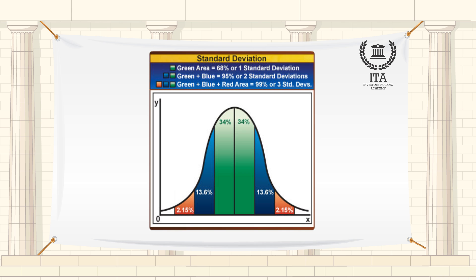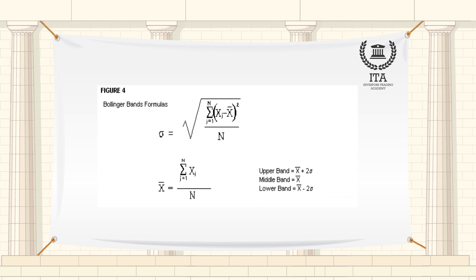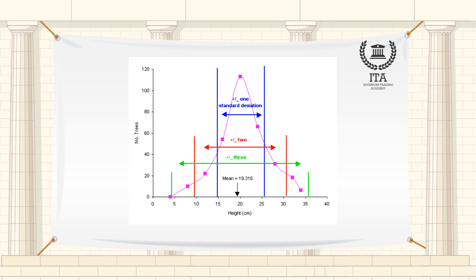Standard deviations are a statistical unit of measure describing the dispersal pattern of a data set. By definition, one standard deviation includes about 68% of all data points from the average in what is referred to as a normal distribution pattern, while two standard deviations include about 95% of all data points.